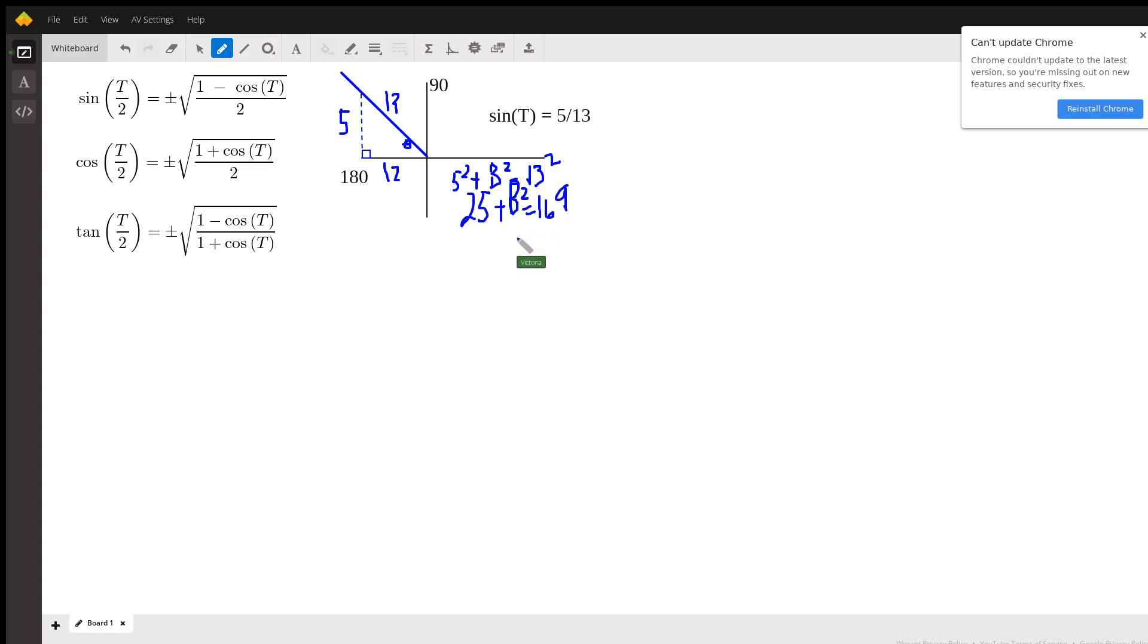And then you subtract 25 and you get that b squared is 144. And then you take the square root of both sides and you get that b is either plus or minus 12. And it turns out that because it is in the second quadrant, x is negative. So this is negative 12. Y is positive. This is positive 5.